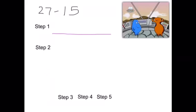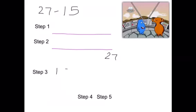Step 2, place the largest number, 27, on the right of the number line. Step 3, partition 15 into tens and units. So we have 1 ten and 5 units.